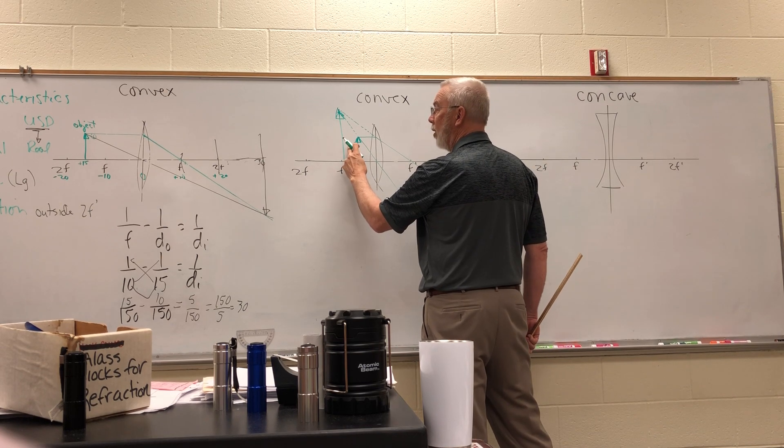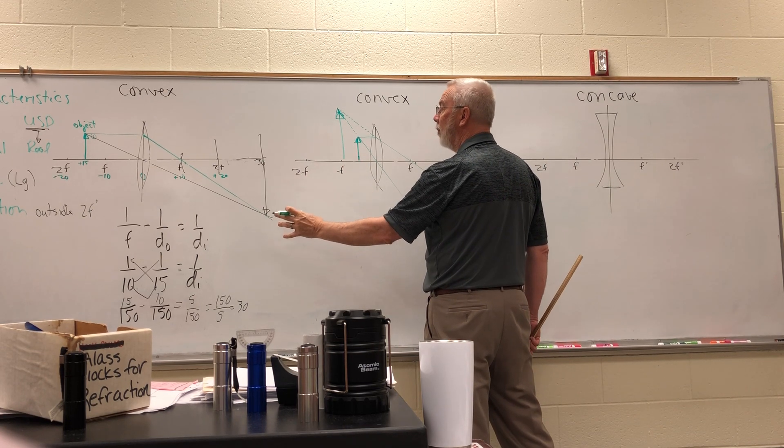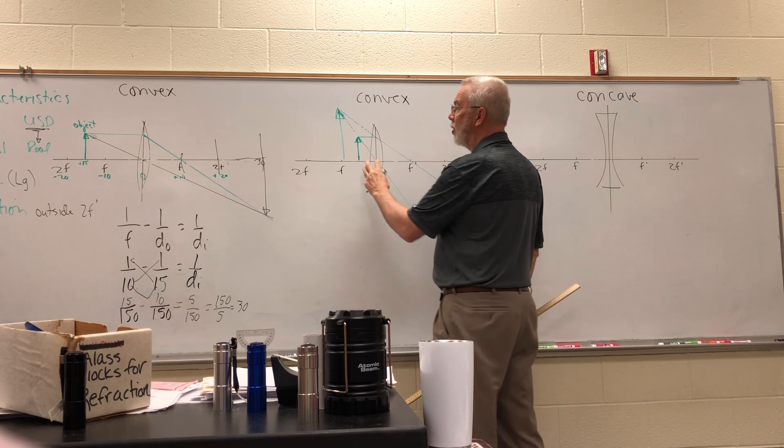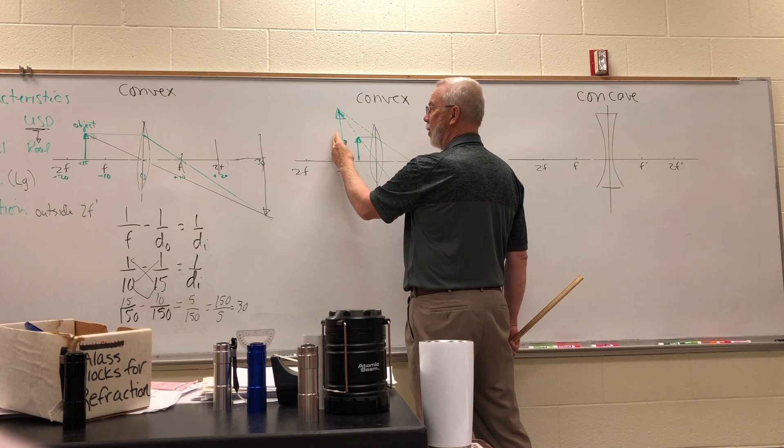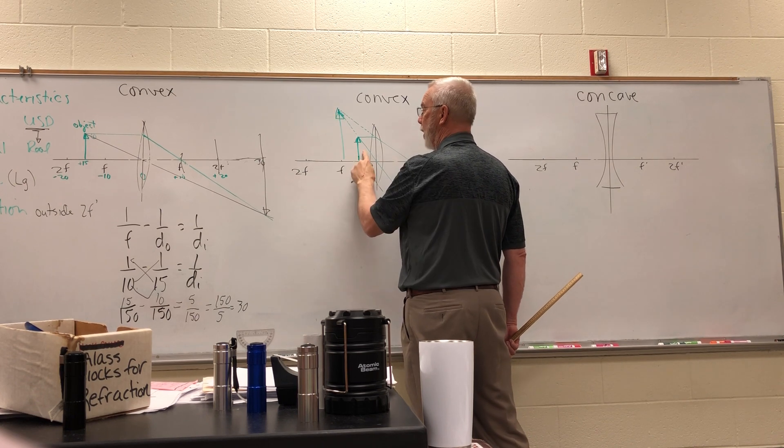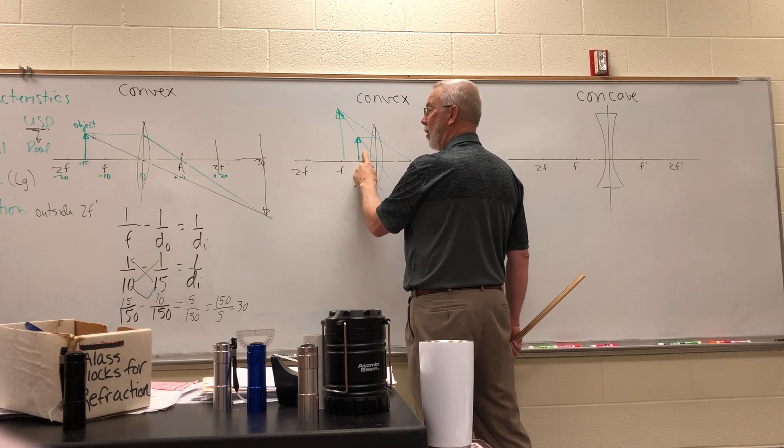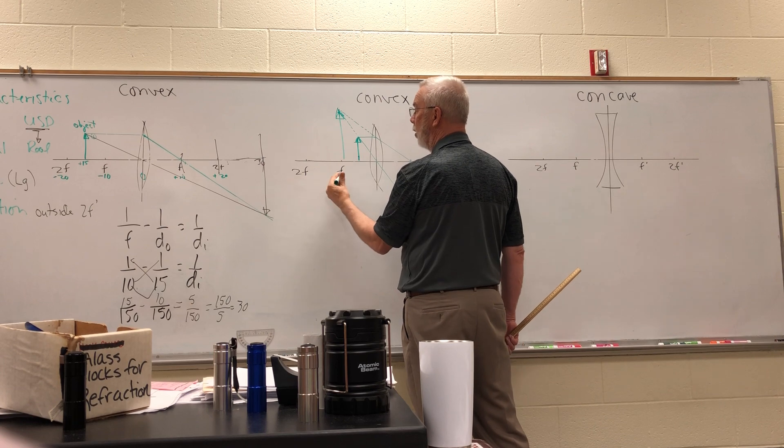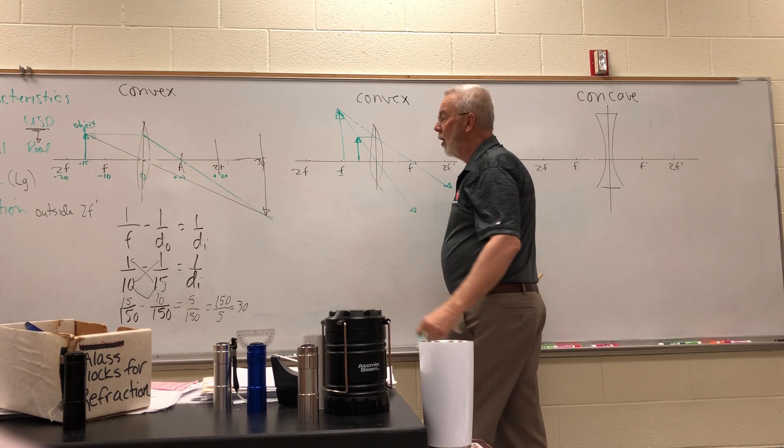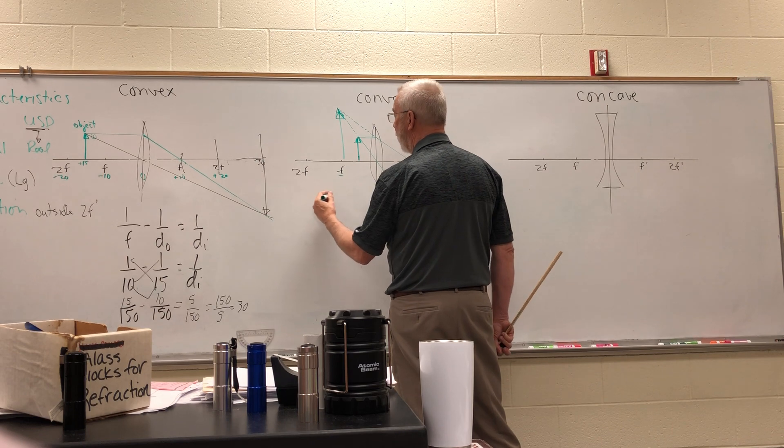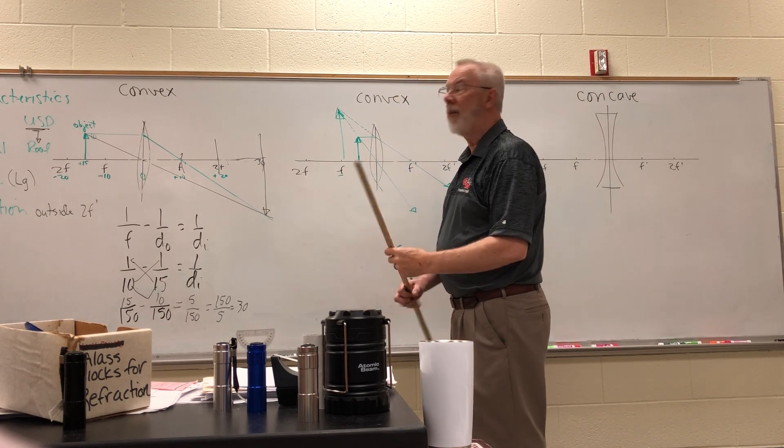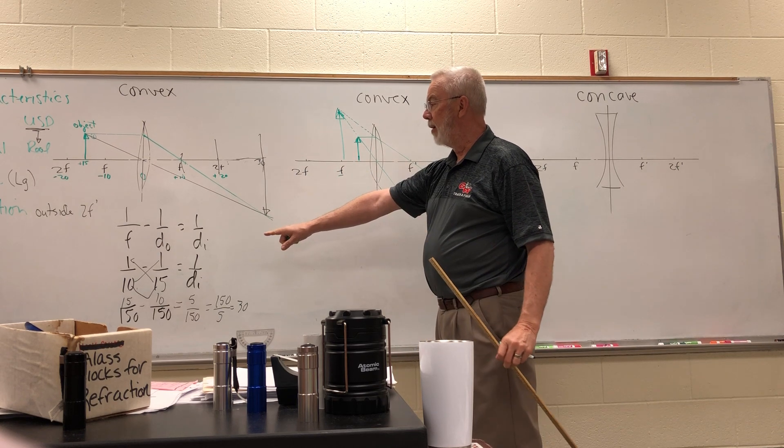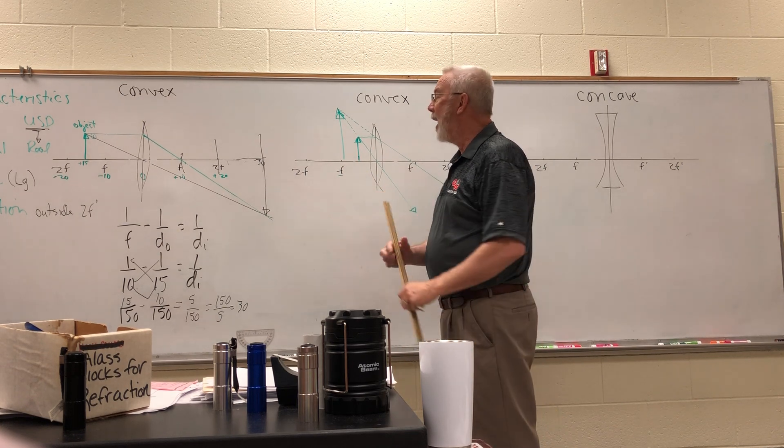Now the math works the same way, the lines went the same way, but now look at the characteristics. It's right side up, so it's virtual. It's larger than the original object and it's located behind the object somewhere close to where f is on this side. And then we can do the math. If we had put some numbers in here, we could have done the math and solve for the image distance in terms of running that same calculation.